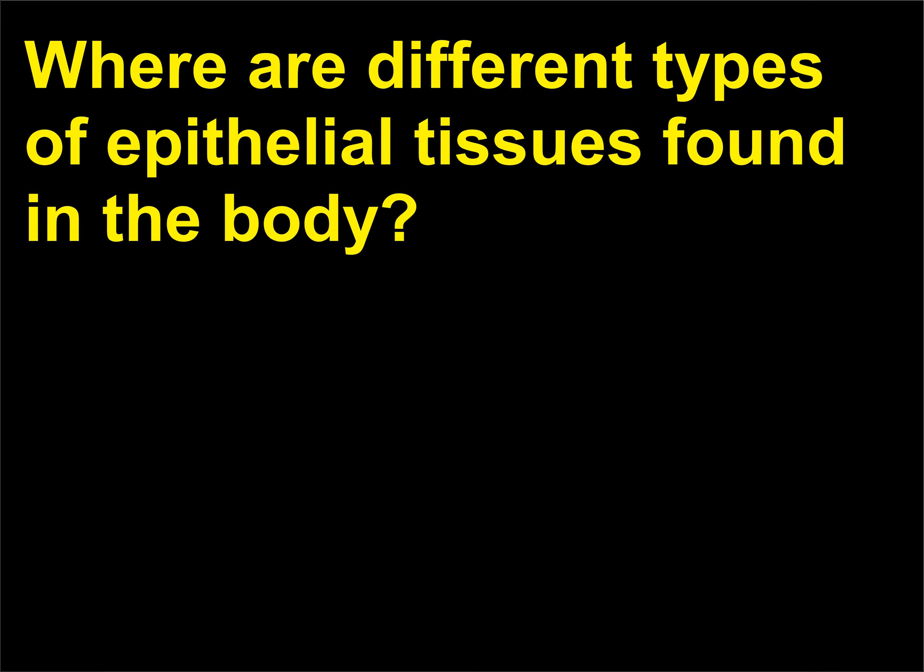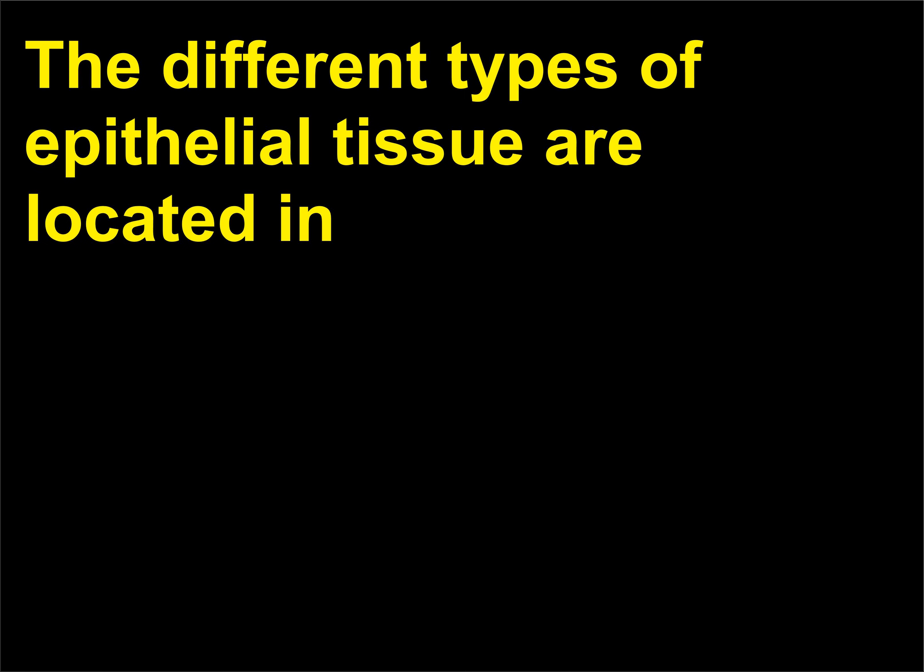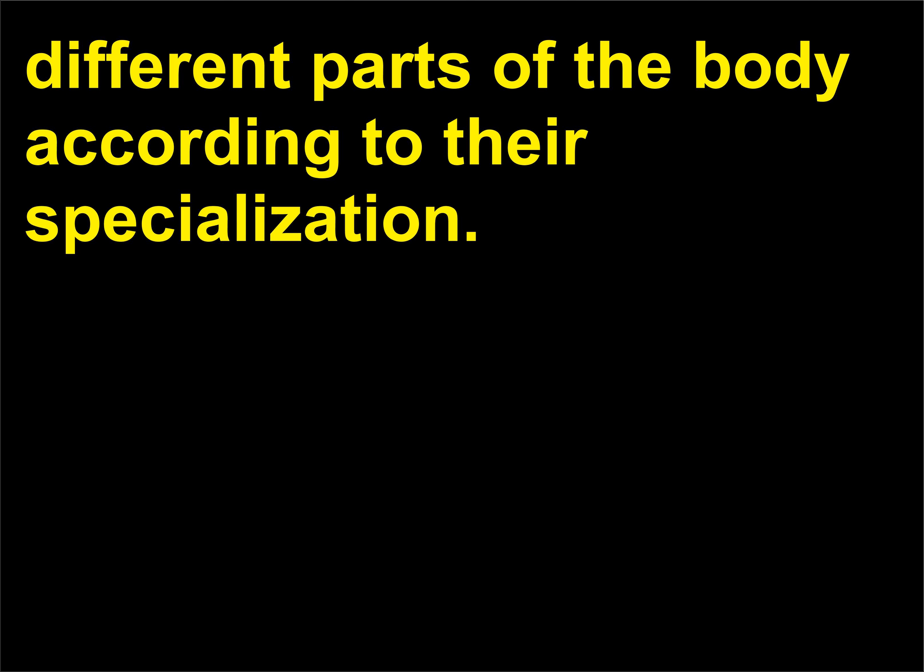Where are different types of epithelial tissues found in the body? The different types of epithelial tissue are located in different parts of the body according to their specialization.